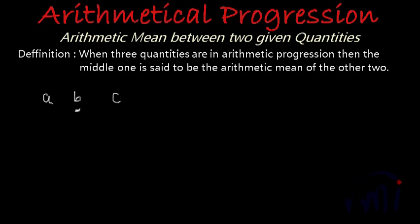So for A, B and C to be in arithmetic progression, what is the necessary condition? Yes, the difference between the consecutive terms should be same. That means B minus A should be equal to C minus B.